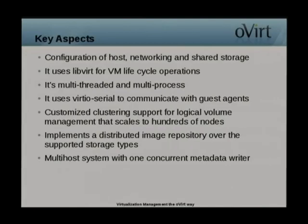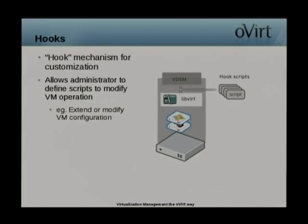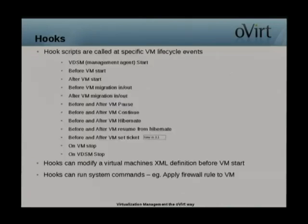oVirt Node implements a distributed image repository over supported storage types, with a multi-host system with one concurrent metadata writer. It has customized clustering support for logical volume management and scales to hundreds of nodes. There's also a hooks mechanism for oVirt Node, which allows you to add your own scripts and modify VM operations at specific events. For example, if there's a new feature in KVM not yet in oVirt, you can create a script to make use of that feature.